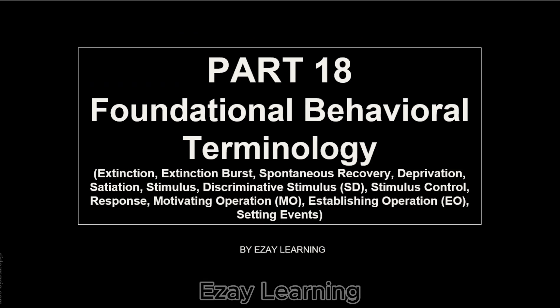Let's talk about each term in one word or phrase to revise. Extinction: elimination of behavior when reinforcement is stopped. Extinction burst: spontaneous increase in intensity or frequency of behavior. Spontaneous recovery: reappearance of an extinguished behavior. Deprivation: lack of access. Satiation: over-consumption. Stimulus: change in the environment. Discriminative stimulus: the stimulus that signals the availability of a reinforcer. Stimulus control: the stimulus in the presence of which behavior is more likely to occur. Response: instance of behavior. Motivating operation: the event that alters the value of a reinforcer. Establishing operation: increases the value of a reinforcer. Setting events: environmental conditions that influence behavior.